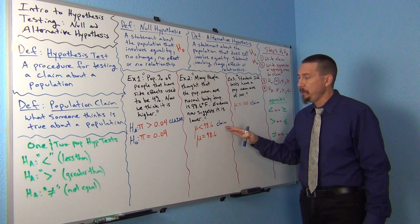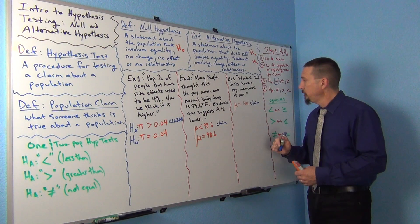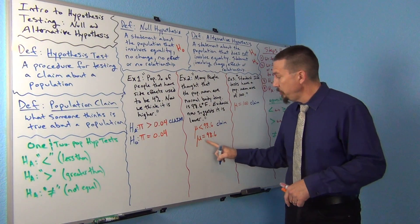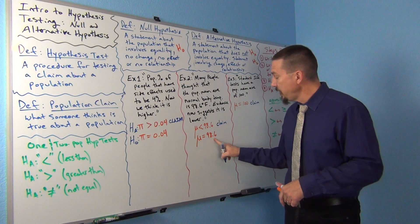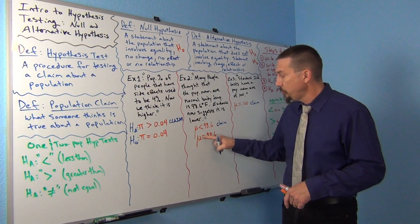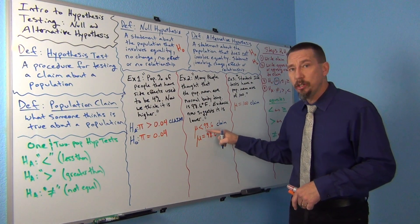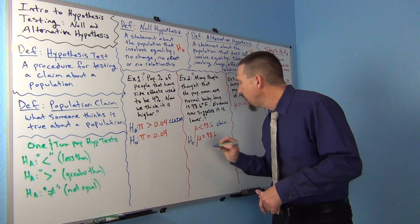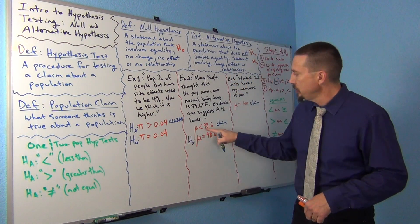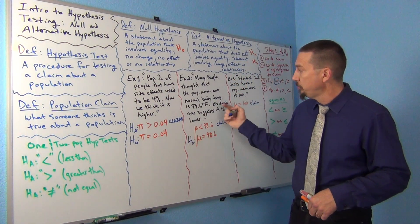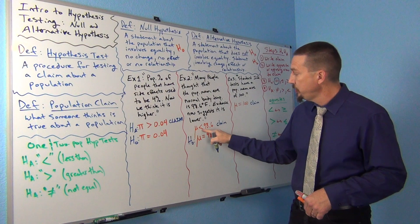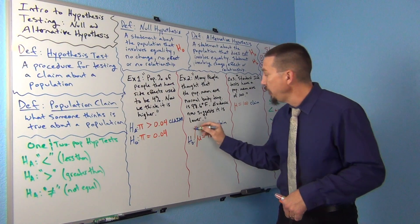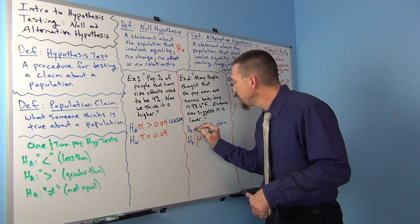We're looking for mu equals 98.6. Any statement with equal is always a null hypothesis, so we're going to write H0 next to that one. This one has less than — remember, less than points to the left — so that's going to be HA, the alternative hypothesis.